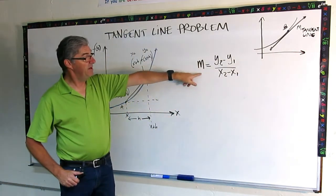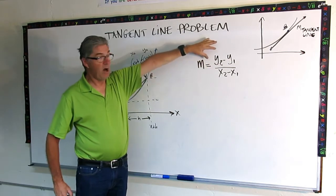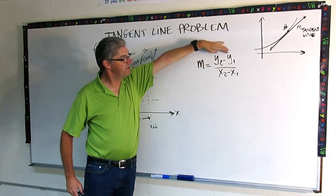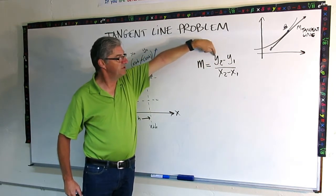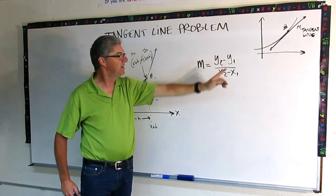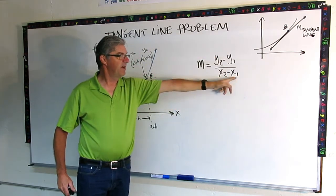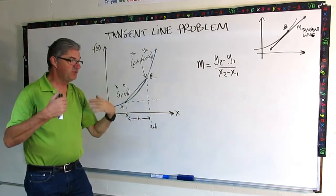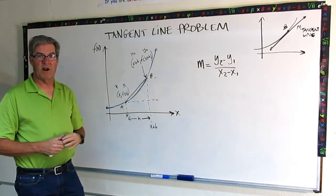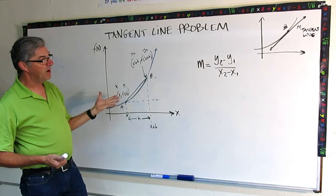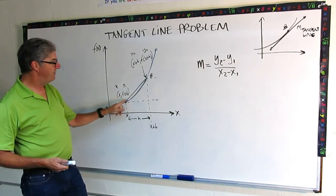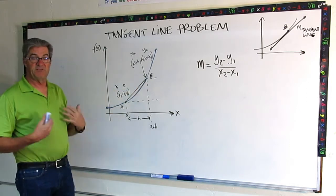Remember, slope is the rate of change on a function, and it's the difference in the rise, which is y2 minus y1 for two points, and over the difference in the run, which is x2 minus x1. So all we need to do is jump on our graph and figure out what our coordinate points are, and then we can calculate the slope of this particular secant line.